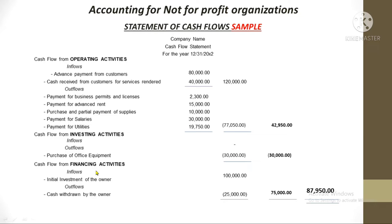Lastly, we have the financing activities section, which includes cash transactions related to financing the company itself. Financing is normally of two classes: first, the company can get funding from its owners — called investment from owners, or for corporations, proceeds from selling shares. Second, the organization can get financing from financial institutions like banks. Getting money from owners or banks is recorded as inflows; paying them back is outflows.